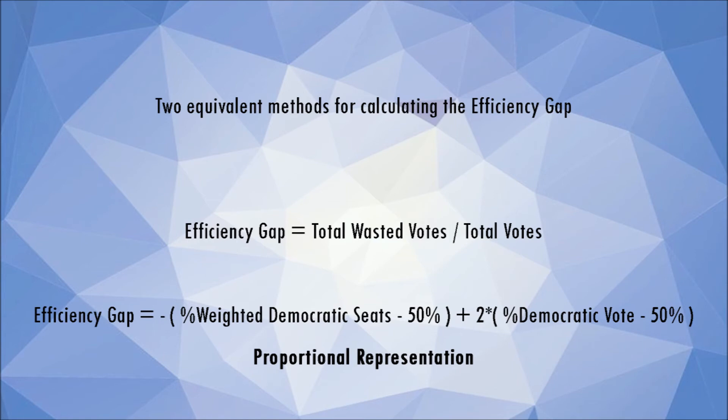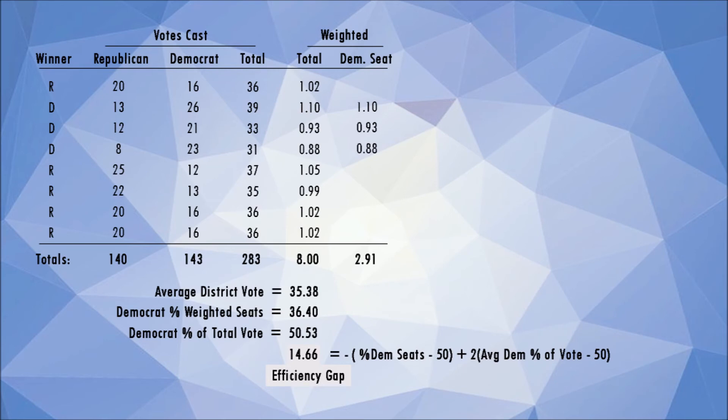And that is not all — I need to throw another wrench into the gears. We have been calculating the efficiency gap wrong; even using the wasted votes method is wrong. We are not off by much, but the error gets worse the more unequal the voter turnout is between districts. It turns out that when we weighted the seats, it introduced errors. When a seat with a higher weight flips from Democrat to Republican or vice versa, it affects the results more than when a seat with a lower weight flips, so the results become skewed towards districts with higher voter turnout.